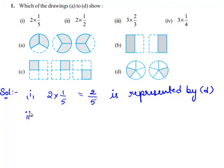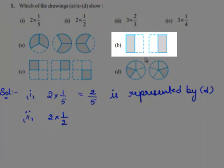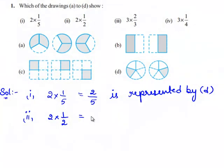Now let us move on to the second bit. We need to identify which of the drawings represents the fraction 2 times of 1 by 2. When we observe drawing B, there are two rectangles. The first rectangle is divided into two halves and the second rectangle is also divided into two halves. Both rectangles have one half shaded. So each rectangle represents 1 by 2. Since there are two rectangles, this represents 2 times of 1 by 2, which equals 1. So the fraction 2 times of 1 by 2 is represented by drawing B.